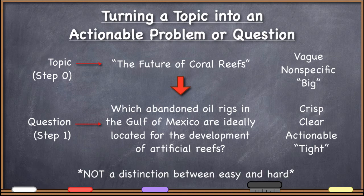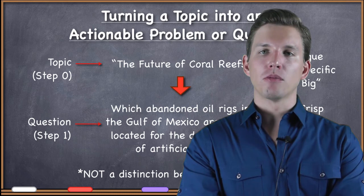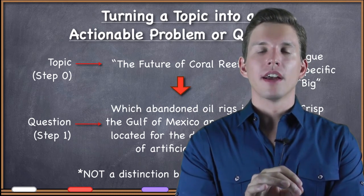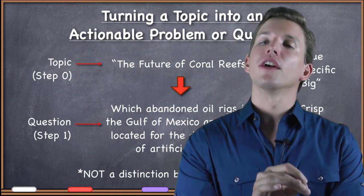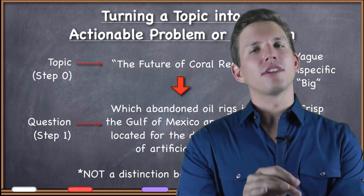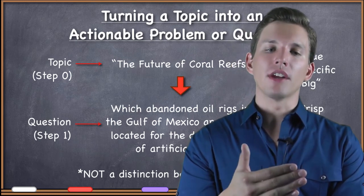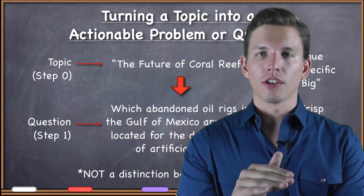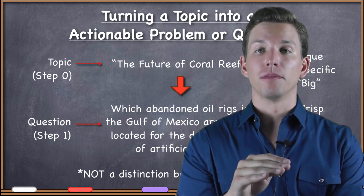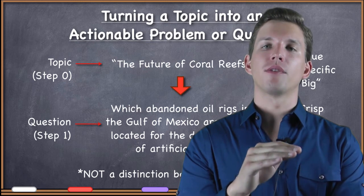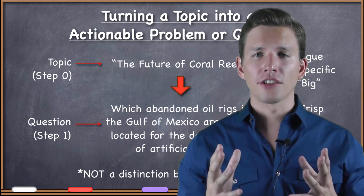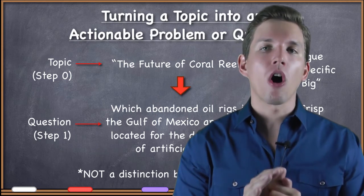Once you get to the end of step one and have a crisp, clear, and actionable question or problem, some will be easy to answer, some harder, and some very hard. It's not that it will be easy once you develop a crisp, clear, actionable question. My point is that it will at least be possible at that point. If you've got a very vague and general idea, you're still on topic — and it's not just hard to do a GIS project on that, it may actually be impossible.